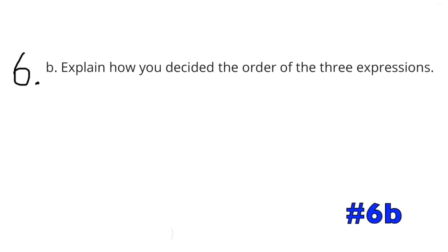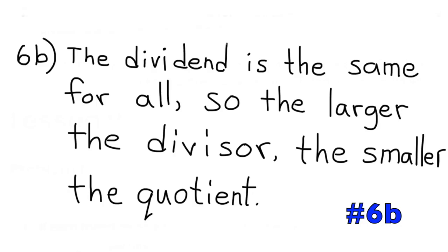Problem 6b: Explain how you decided the order of the three expressions. The dividend, 56, was the same for all of them, so the larger the divisor, the smaller the quotient.